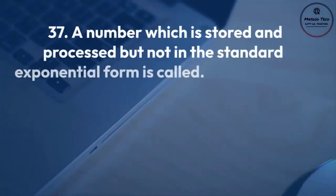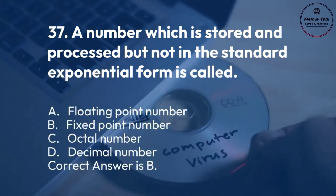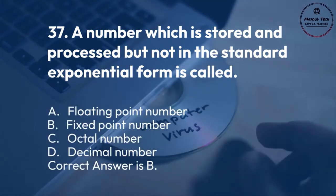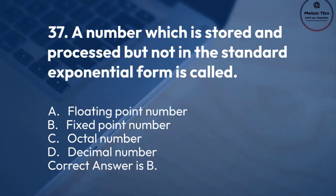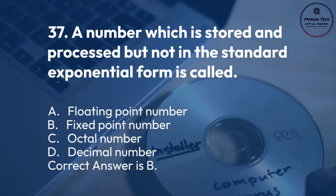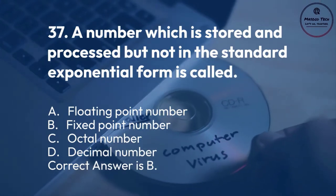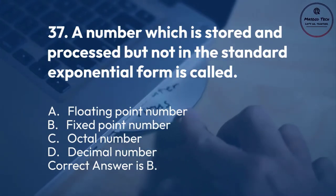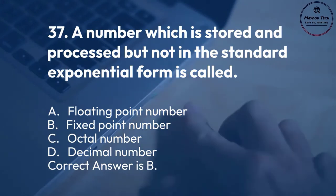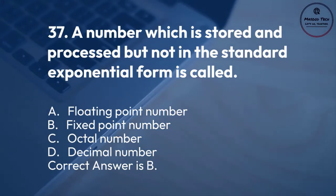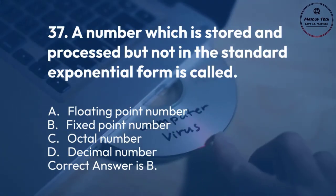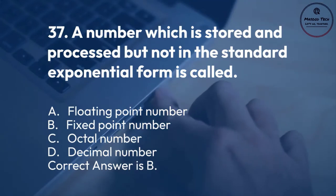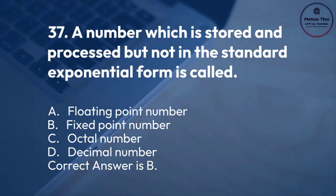Number 37. A number which is stored and processed but not in the standard exponential form is called: A. Floating point number. B. Fixed point number. C. Octal number. D. Decimal number. Correct answer is B.